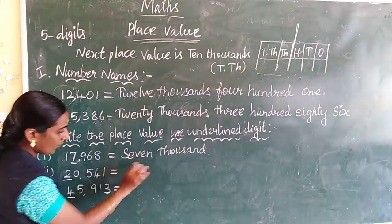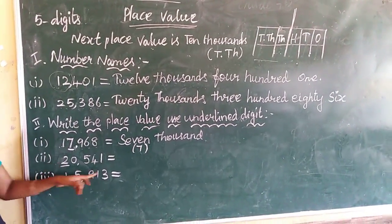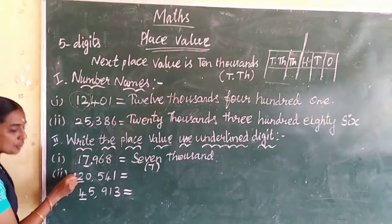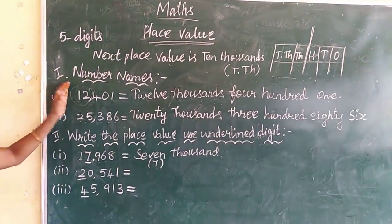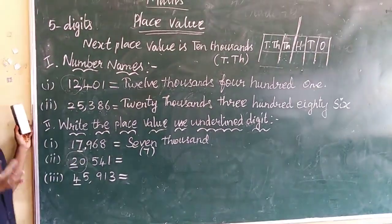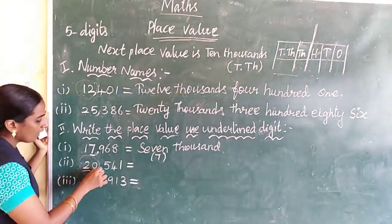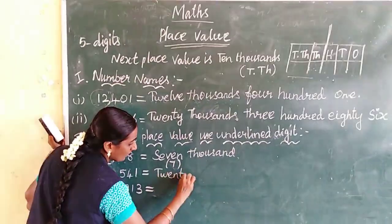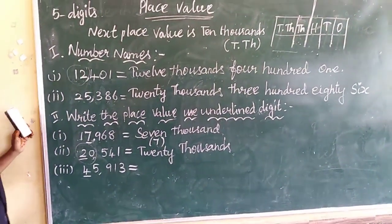Thousand place — how many thousand? Seven. Seven is in the thousand place, so we will write seven thousand. Otherwise we can write in number also — seven thousand. Next one, look at the second one: tens, hundred, thousand, ten-thousand. Which place is underlined? Two. Two is in the ten-thousand place. Don't write two ten-thousand because the total period is thousand period. We will write two-zero — we will add two zeros. Ten thousand is here, so we can write twenty thousand.